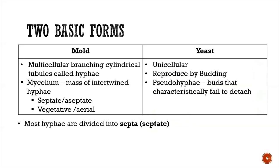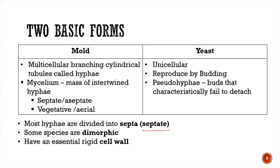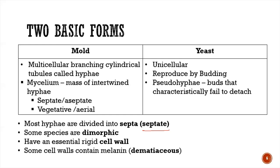Most hyphae are divided into septa and are described as septate. Some species are dimorphic — they could exist either as molds or yeast depending on temperature or environmental condition. Molds usually exist at room temperature whereas yeast exist inside the human body at body temperature. Fungi have an essential rigid cell wall, and some cell walls contain melanin; those containing melanin are described as dematiaceous.